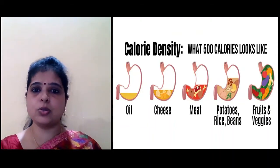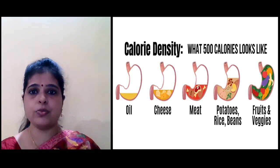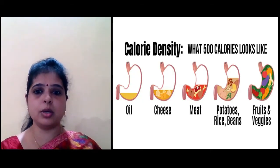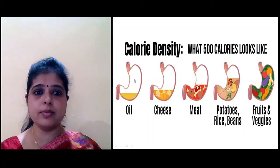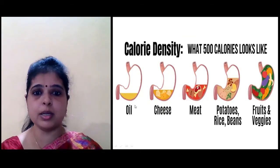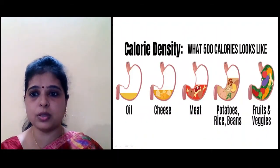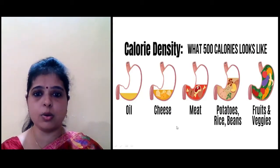Here I have tried to show you by a figure — that is the calorie density or energy density. What 500 calories look like: if you consume oil, cheese, meat, potato, rice, beans, or fruits and vegetables. In oil, you will get a lot of calories in a smaller amount. But in fruits and vegetables, in a larger quantity of food, there are fewer calories — so if you need the same calorific value, you will have to eat more fruits and vegetables than oils.